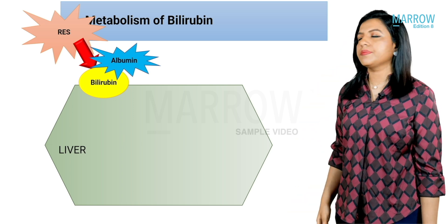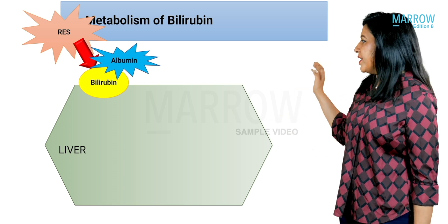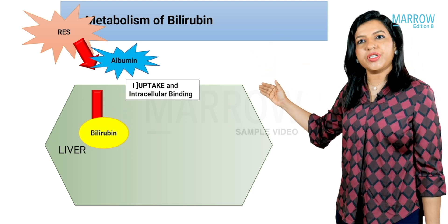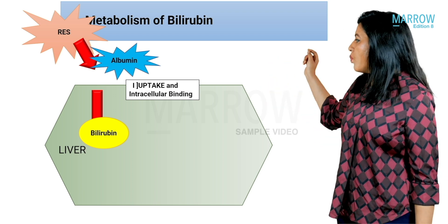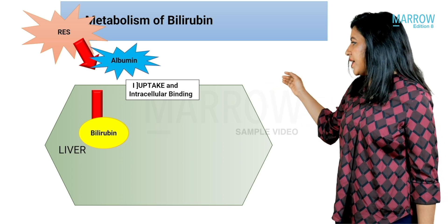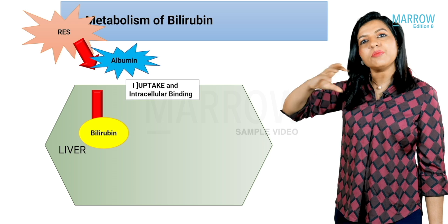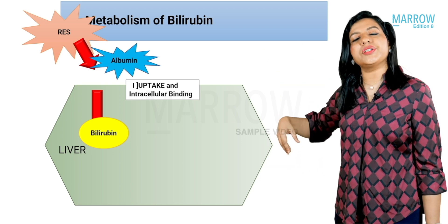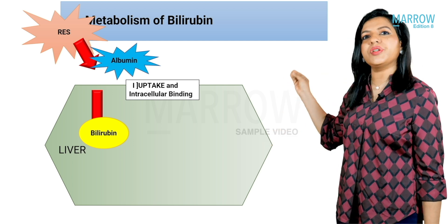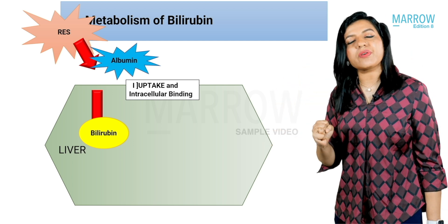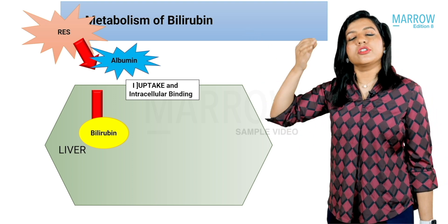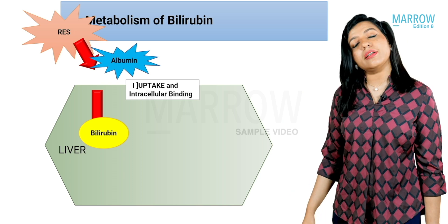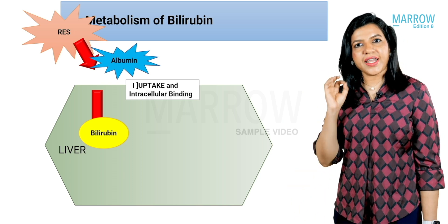The second organ system is the liver. There are three major steps in bilirubin processing here. First is uptake: albumin-bound bilirubin is taken up into liver cells. During uptake, albumin detaches — only bilirubin enters the cell. To prevent regurgitation of bilirubin back into the blood, it is bound to intracellular proteins, a process called intracellular binding.